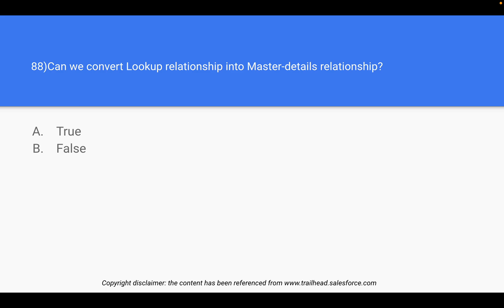You can convert a lookup relationship into a master-detail relationship in Salesforce. However, it's important to note that the conversion is a one-way process — once you convert, you cannot go back. Whatever two records are connected in lookup will then have a master-child relationship.